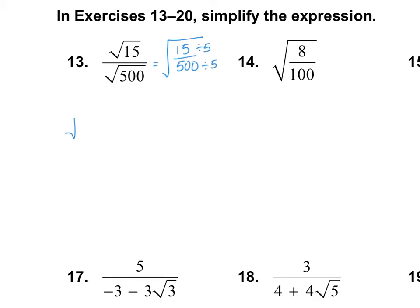This now becomes the square root of 3 over 100, which we can break apart: square root of 3 over the square root of 100. The square root of 3 stays as square root of 3 because we cannot simplify that, and the square root of 100 is 10. This cannot be simplified any further, so that is my answer for number 13.